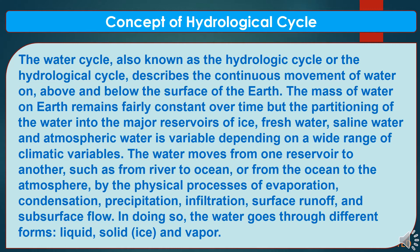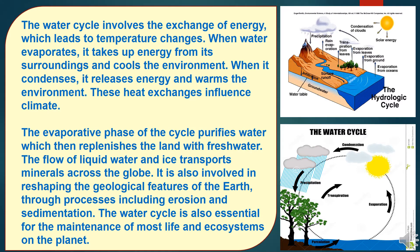The water moves from one reservoir to another, such as from river to ocean or from ocean to the atmosphere, by the physical processes of evaporation, condensation, precipitation, infiltration, surface runoff, and subsurface flow. In doing so, the water goes through different forms like liquid, solid, ice, and vapour. The water cycle involves the exchange of energy which leads to temperature changes.